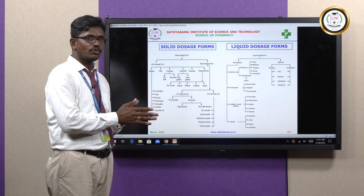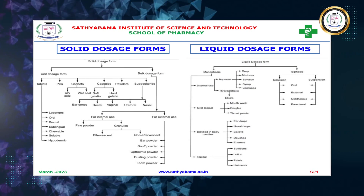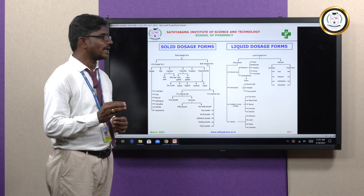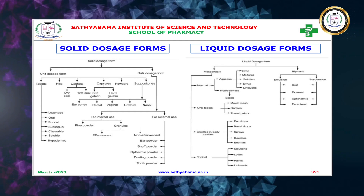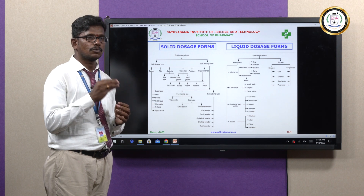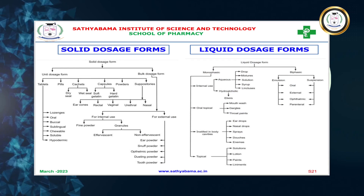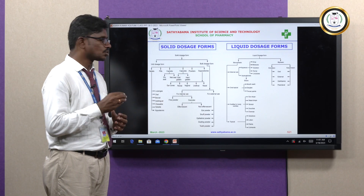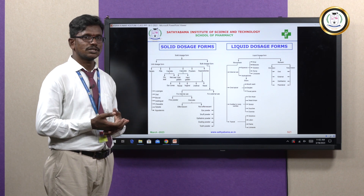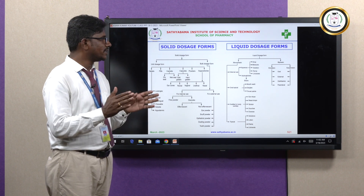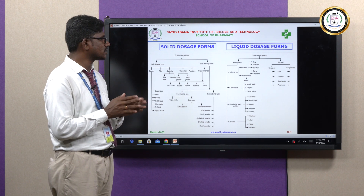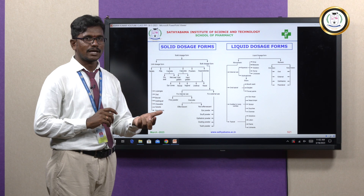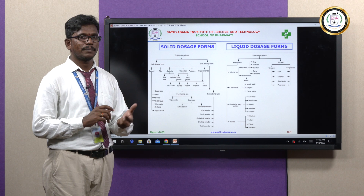For liquid dosage forms: monophasic examples for internal use include aqueous preparations — drops, mixtures, solutions, syrups, linctuses — and hydroalcoholic preparations such as elixirs. Oral topical preparations include mouthwashes, gargles, and throat paints. Some liquid dosage forms are administered into body cavities: ear drops, nasal drops, eye drops, sprays, douches, and enemas. Topical preparations include solutions, lotions, paints, and liniments. Biphasic liquid dosage forms — emulsions and suspensions — are categorized by route: oral emulsion, oral suspension, externally applied suspension and emulsion, topically administered emulsion and suspension, ophthalmic emulsion, ophthalmic suspension, parenteral emulsion, and parenteral suspension.